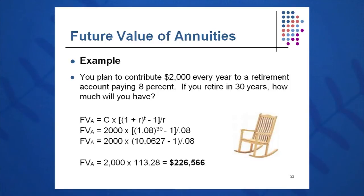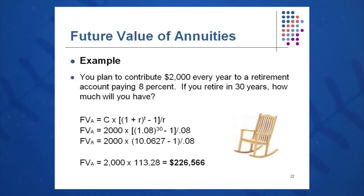Let's look at some examples. You're going to contribute $2,000 every year to a retirement fund paying 8%. If you're retiring in 30 years, how much will you have? I envision a timeline with $2,000 invested the same amount each year for 30 years, put in the bank at 8%. How much will I have in 30 years?